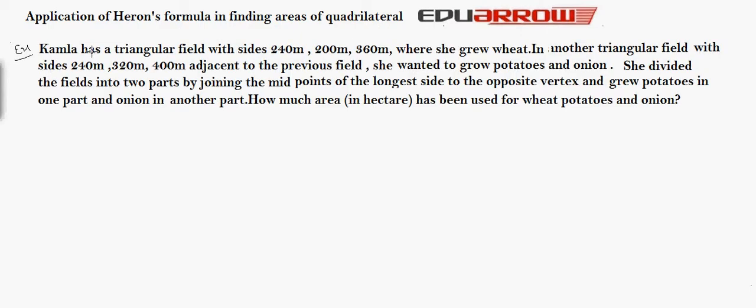Now let's understand by taking an example. Kamala has a triangular field with size 240 meters, 200 and 360 meters adjacent to the previous field. In another triangular field with size 240 meters, 320 meters, 400 meters adjacent to the previous field, she wanted to grow potatoes and onions.